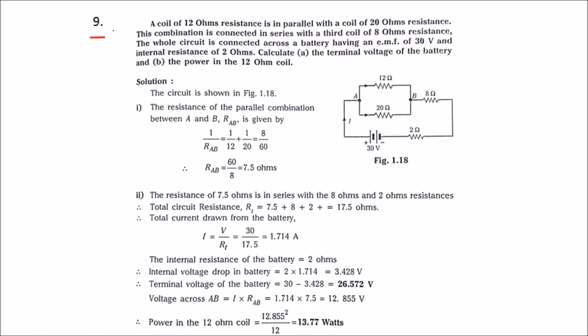Problem number 9. A coil of 12 ohms resistance is in parallel with 20 ohm resistance. This combination is connected in series with a third coil of 8 ohms resistance. The whole circuit is connected across a battery having an EMF of 30 volts and an internal resistance of 2 ohms. Calculate the terminal voltage of the battery and the power in the 12 ohm coil.